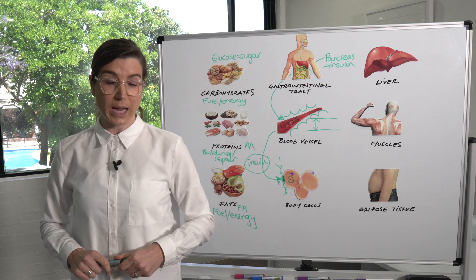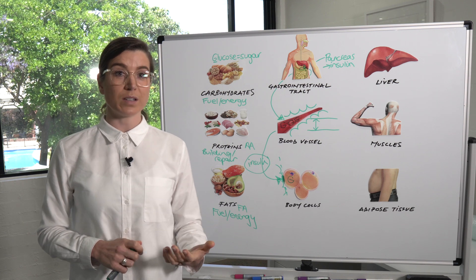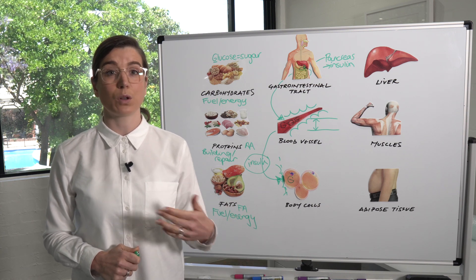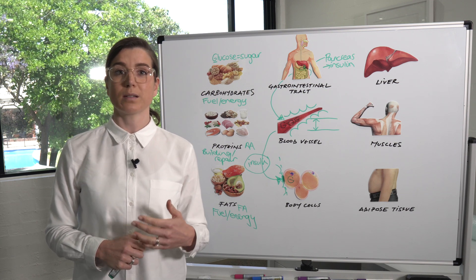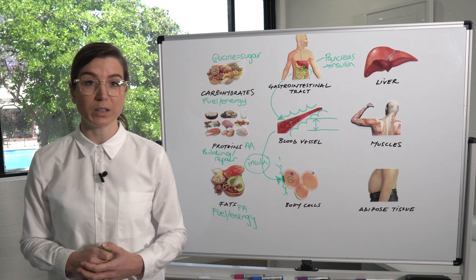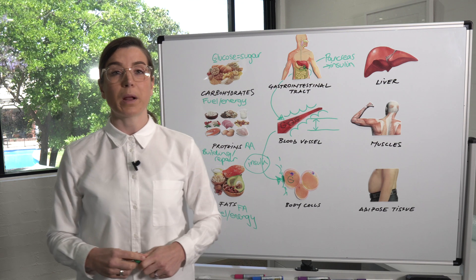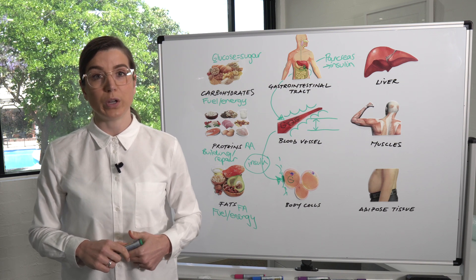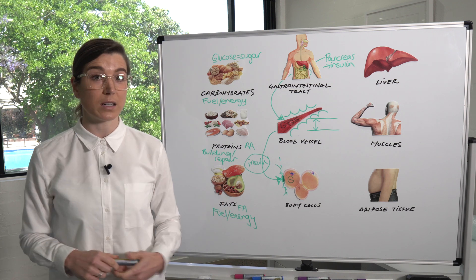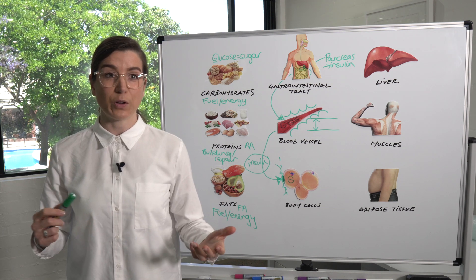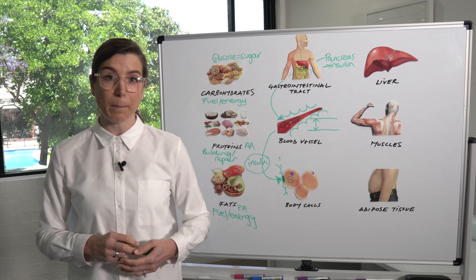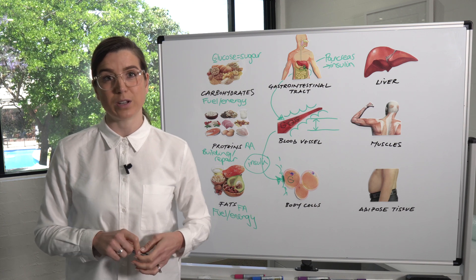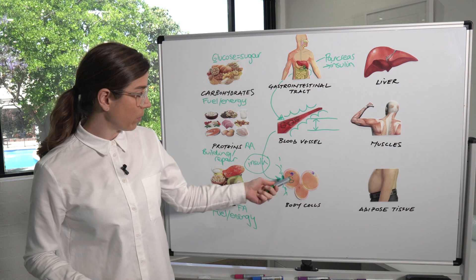Regarding protein, the evidence is very clear that the more animal protein you eat, the higher the risk of diabetes. Animal protein contributes to insulin resistance and to the underlying inflammation. Conversely, the evidence is also very clear that the more plant-based you go, the lower the risk of diabetes — and that is really down to the phytonutrients, vitamins, minerals, and antioxidants that help reduce inflammation and open up those keyholes.